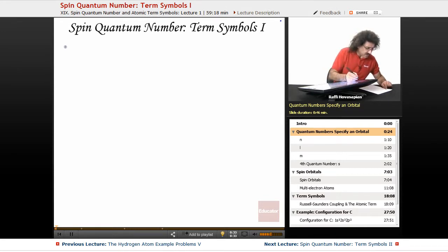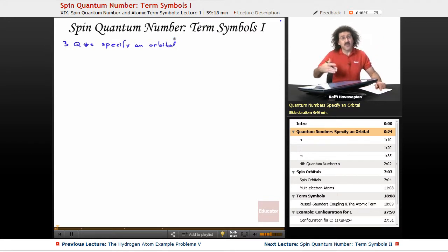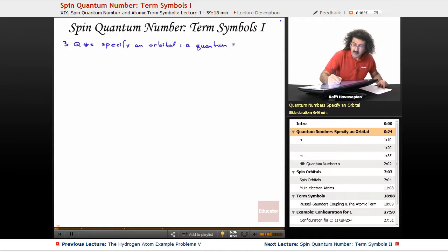So three quantum numbers so far. Three quantum numbers specify an orbital, a wave function. A wave function represents an orbital for the hydrogen atom that we saw. We can also call it a quantum state, or we can just call it a wave function, which is exactly what it is.